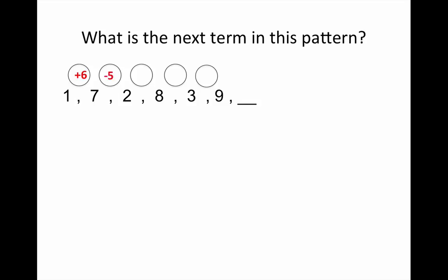So, 1 plus 6 equals 7. 7 minus 5 equals 2. The gap between 2 and 8 is 6, and it's increasing, so it's plus. 8 to 3 is going down, minus 5, and you can see we have a clear pattern emerging. 3 plus 6 makes 9.